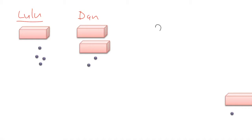So Lulu has the amount of sweets in a box plus four extra, and Dan has got two lots of sweets in a box plus two extra. We look at who has the most boxes — we're going to leave them with boxes and leave the other person just with sweets. So let's get rid of Lulu's box.